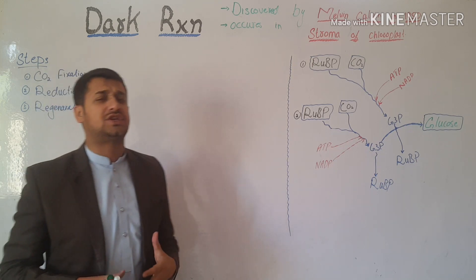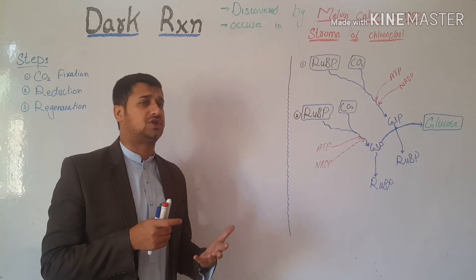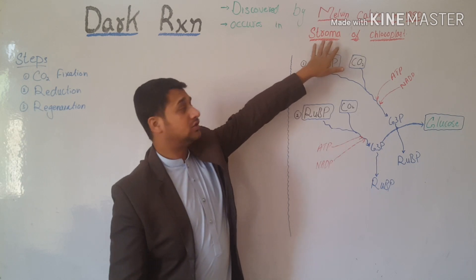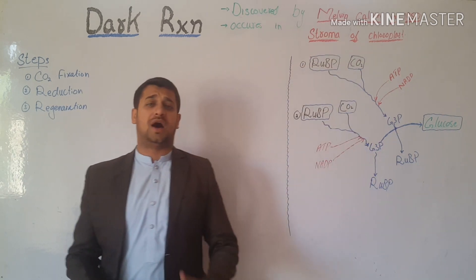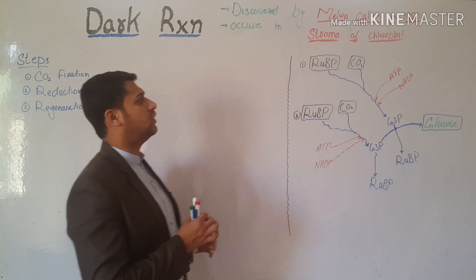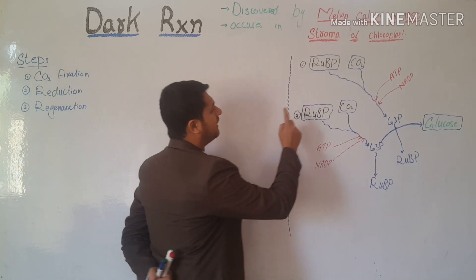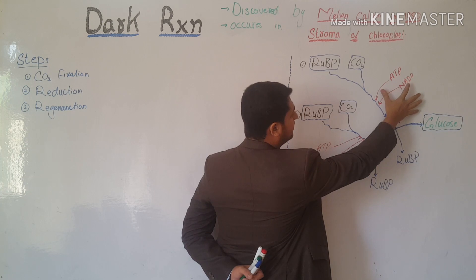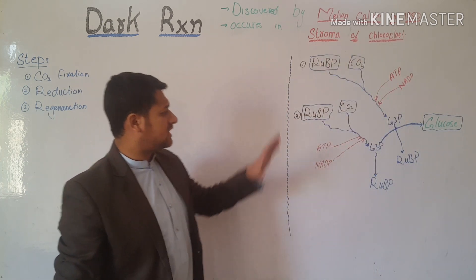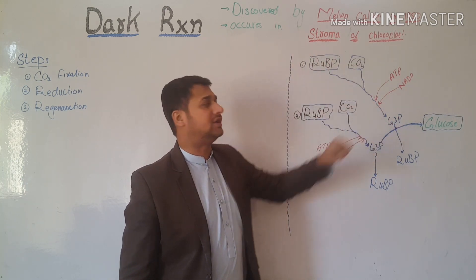Where does this reaction occur? In the chloroplast, the ground part is called the stroma. So the dark reaction occurs in the stroma, just as the light reaction occurs in the grana. The dark reaction requires ATP, NADPH₂, and carbon dioxide from the environment, and the conclusion of this process is the making of glucose.